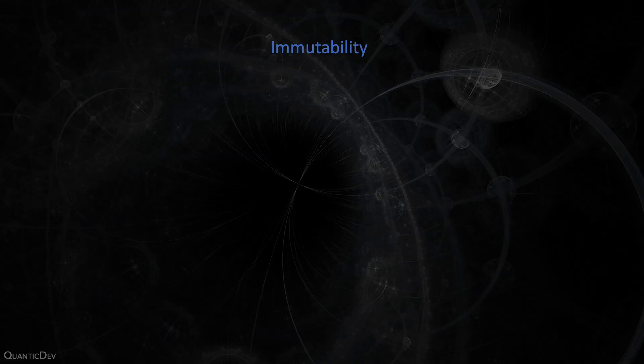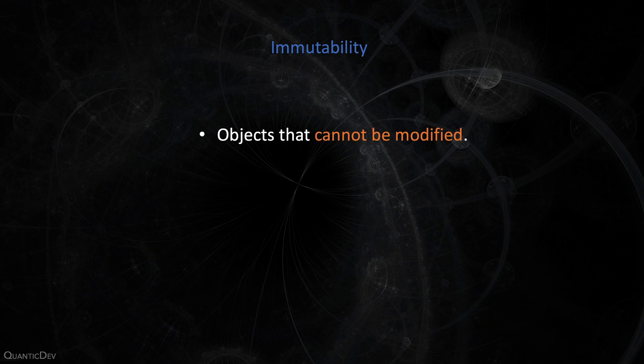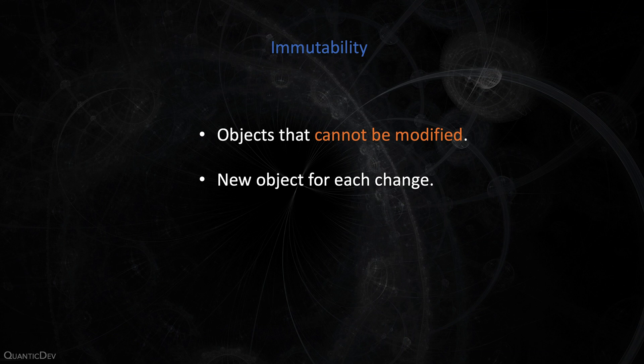11. Immutability. Immutable objects cannot be modified once they are created. This means if you have an object encapsulating the contact details of a person, you cannot modify them after the object is initialized. So what do you do if you want to update the contact details? You initialize a new object and copy the details along with the updated fields. This sounds inefficient, but once you have hundreds of objects that can mutate at any time, tracking the state of all the objects in your app becomes impossible.